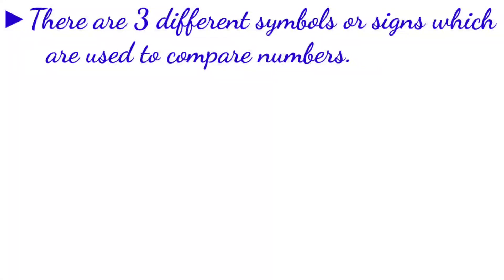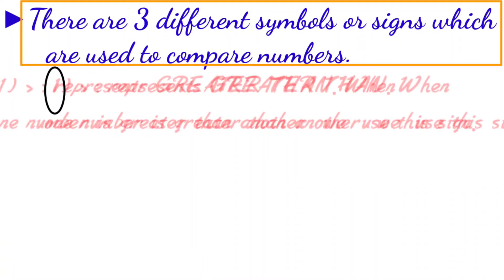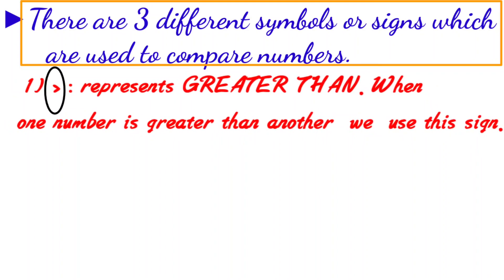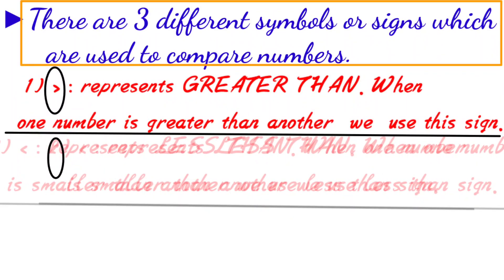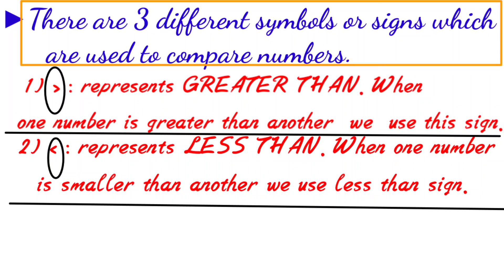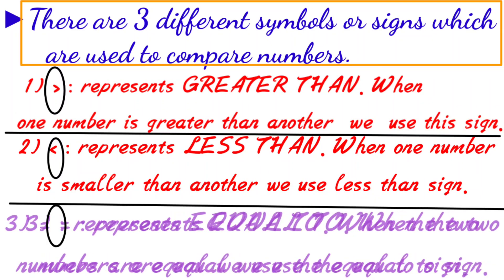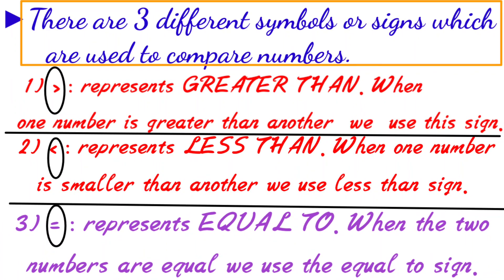Now let us see the different symbols which we use to compare the numbers. The greater than sign. When one number is greater than another we use this sign. Smaller than. When one number is smaller than another we use this sign. Equals to. When two numbers are equal we use this sign.